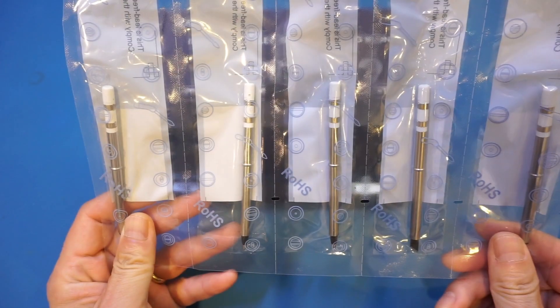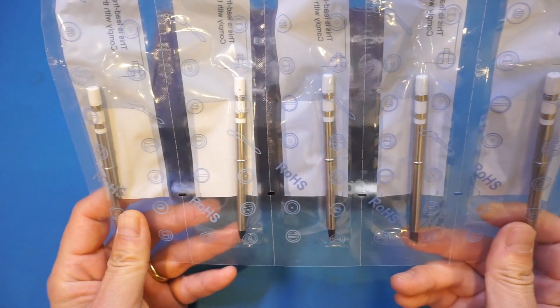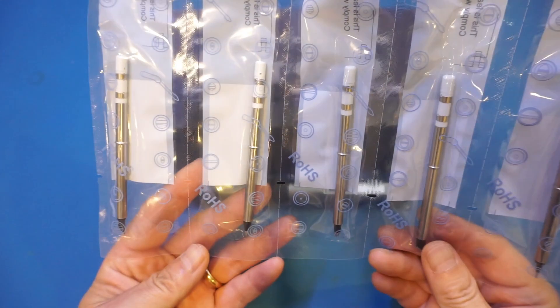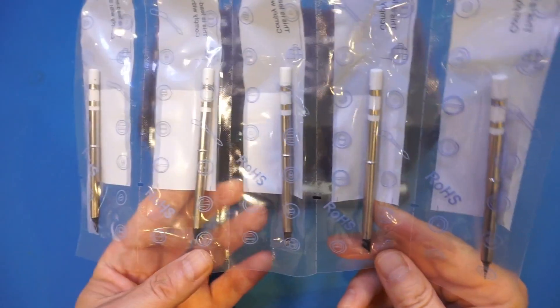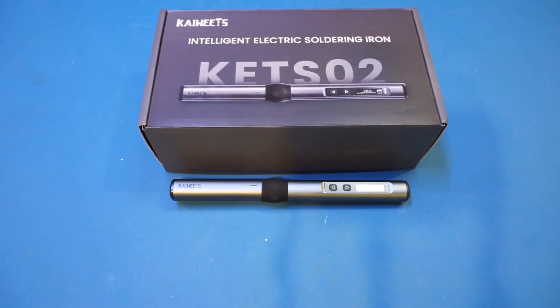You can see that we have different tips supplied with the soldering iron here. Personally, my favorite is either chisel or beveled. By the look of it, we don't have a chisel tip included in the set. The one that is currently on the soldering iron is a small beveled one and I will leave it on for our testing later.